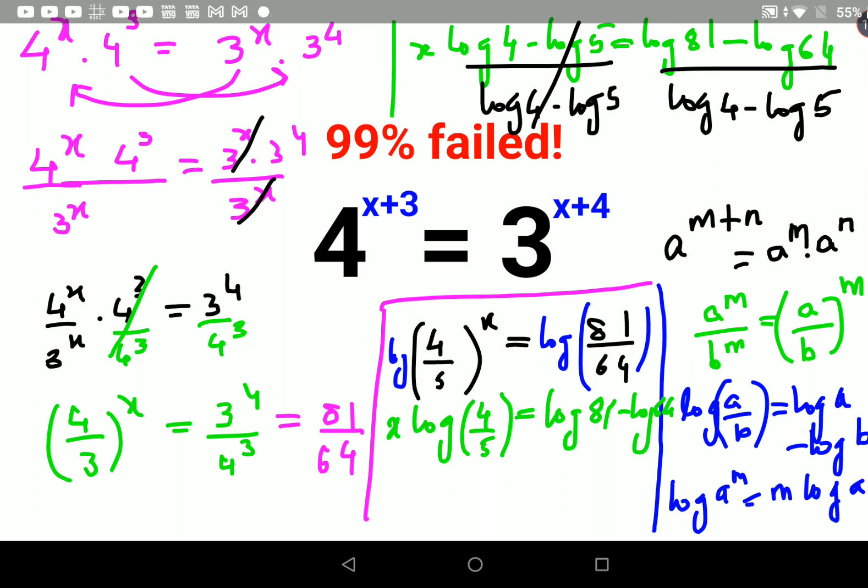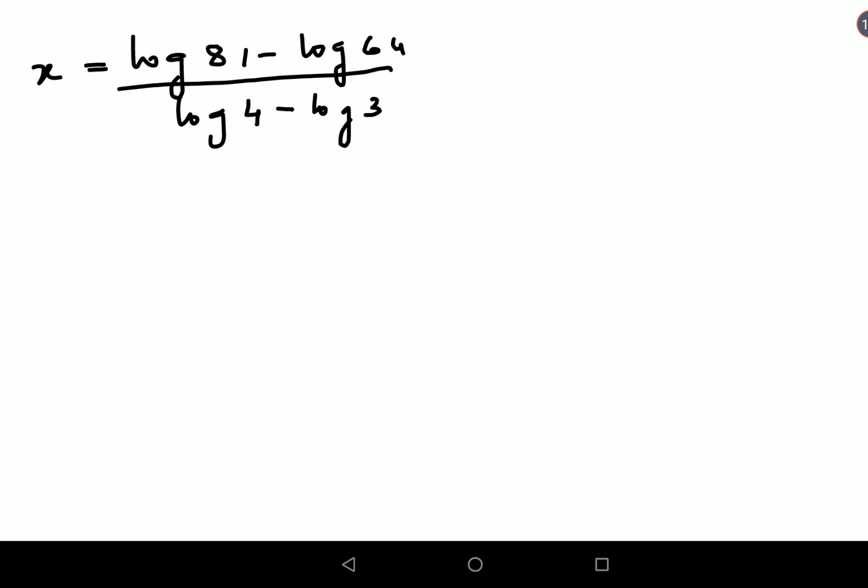Here also we will divide by log of 4 minus log of 3. So this will cancel. And now very easily I can say the value of x is log 81 minus log 64 upon log 4 minus log 3. Now please understand here you can have another option.